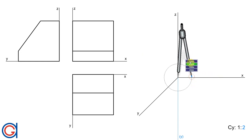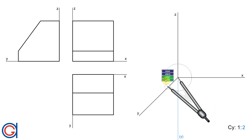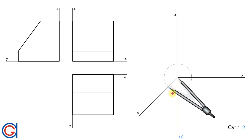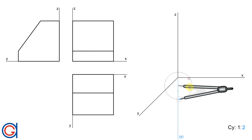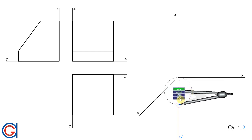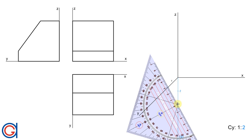Now with the compass set on the origin and with a radius, we are going to transport this length once onto the Y axis and twice onto the elongation of the Z axis. 1 represents the numerator and 2 represents the denominator of the scale we are going to use. We are then going to join these new points with a blue line, which represents the reduction scale we are going to use.